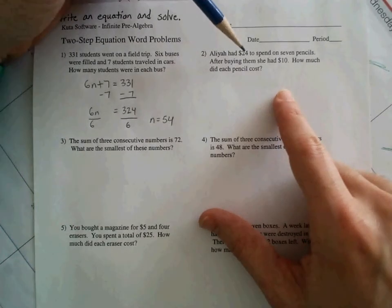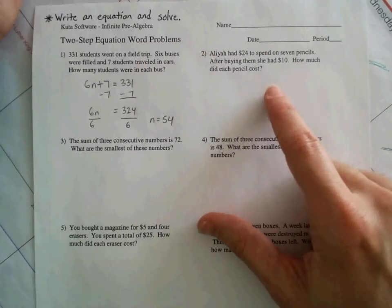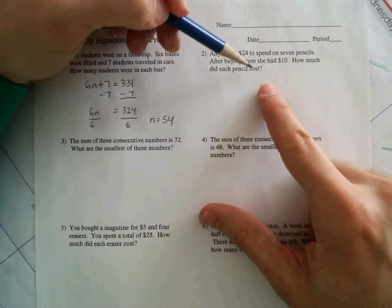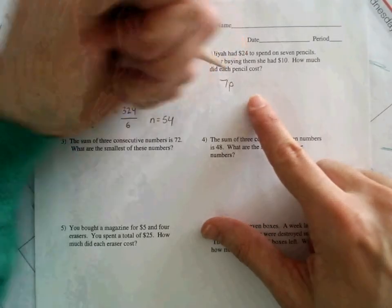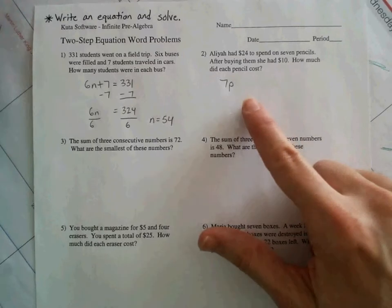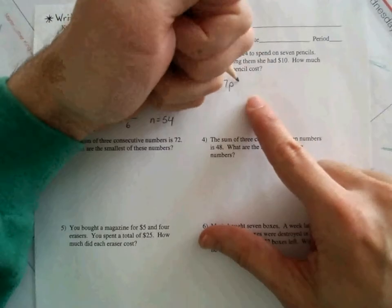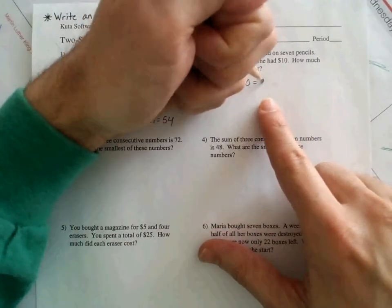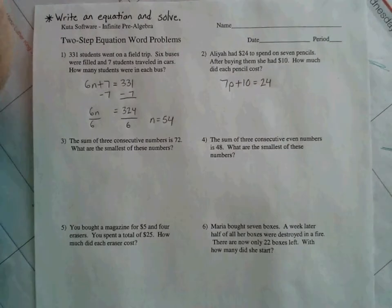Checking out this next one here. She's got to spend $24 on 7 pencils. After buying them, she had 10 bucks. So how much did each pencil cost? So, see, you bought 7 pencils. You're trying to find how much each pencil costs. So you can do 7 times the amount for each pencil. I'm going to use P for pencil. Plus, see, after buying them, she had 10 bucks left. So plus that 10 bucks she still hasn't spent. And all of that was the total she started with, which was 24 bucks.